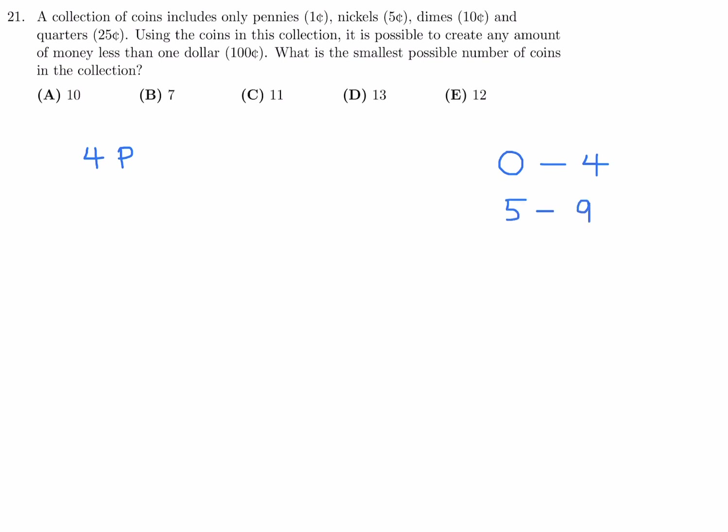To create a sum anywhere from five to nine, you would need an additional nickel, because if you take any of those sums and add the nickel, you'll be able to get a sum from five to nine. For example, two pennies plus a nickel gives seven cents, which is in that range. Now let's go to the next range: 10 to 19 — for that I obviously need a dime.